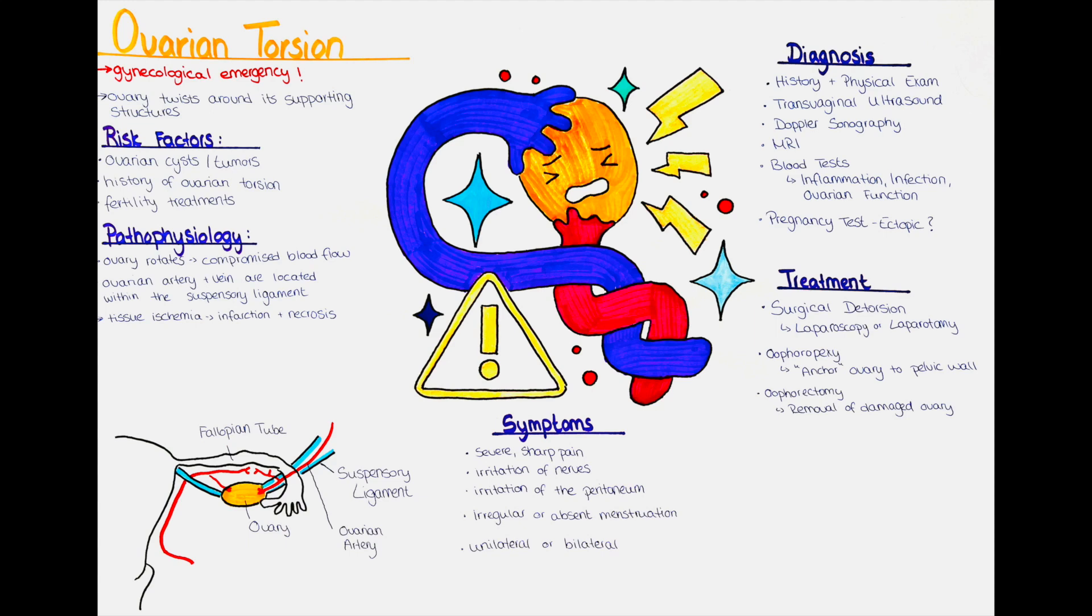The lack of blood flow and oxygen to the ovary leads to tissue ischemia, which means that the ovarian tissue doesn't receive an adequate supply of oxygen and nutrients. Ischemia can cause tissue damage and, if left untreated, can lead to necrosis, so cell death, of the affected ovarian tissue.